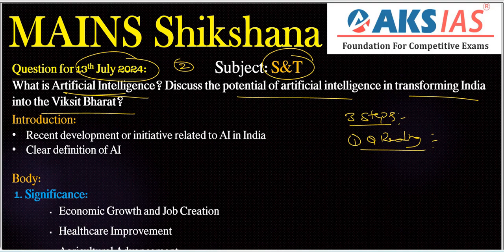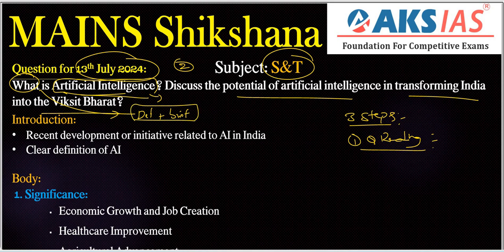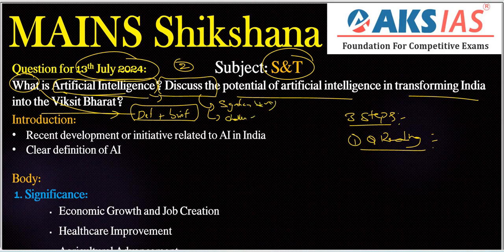Next, what is the topic here? Artificial intelligence. What are the important question tags? First one is 'what' — this means not only definition but also we need to describe or write something regarding the topic in brief. The other question tag is 'discuss', which means we need to write significance, positives, and also challenges — negatives — and finally provide needed measures.